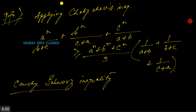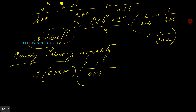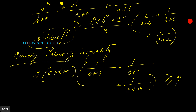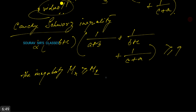Now we apply Cauchy-Schwarz's inequality — if you don't know what this is, you should see our video on it. By Cauchy-Schwarz: 2(a+b+c) · (1/(a+b) + 1/(b+c) + 1/(c+a)) ≥ 9.